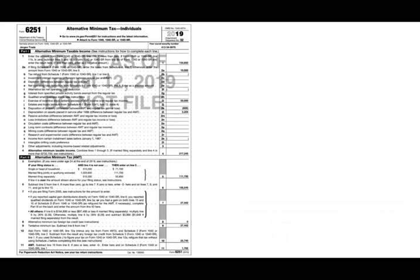Let's take a look at the picture again and do this on the form. The taxable income for this individual is $217,245 — they're married filing jointly. Therefore their exemption is $111,700. Do they qualify for the whole exemption? Yes, because their income is well below the phase-out limit. So we take $217,245 minus $111,700, and their AMTI is $105,545. Now we multiply this by the tax rate.